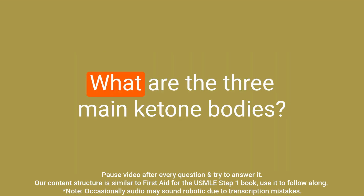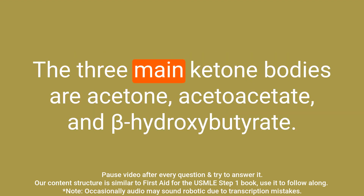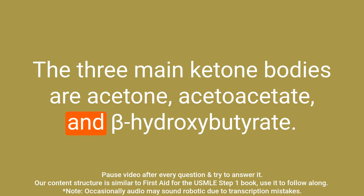Question: What are the three main ketone bodies? Answer: The three main ketone bodies are acetone, acetoacetate, and beta-hydroxybutyrate.